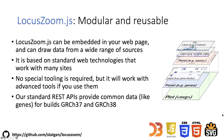LocusZoom.js is a modular and reusable library. You can drop it into any webpage. It's built on standard technologies like D3, SVG, HTML, CSS, and JavaScript, which means it will work on many different kinds of websites in many different use cases. It's a configuration-driven library, which means you can build new kinds of visualizations with control over point size, shape, color, and all the interactive features you've seen so far can be customized for your use case.